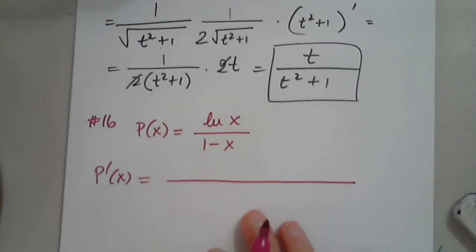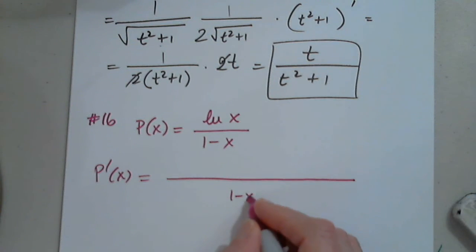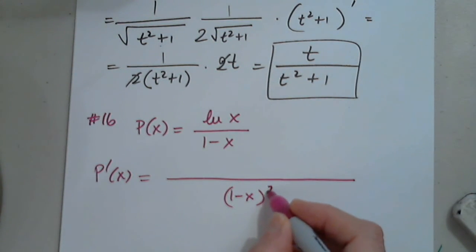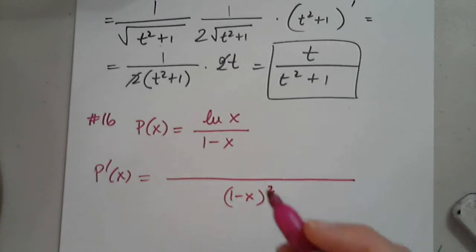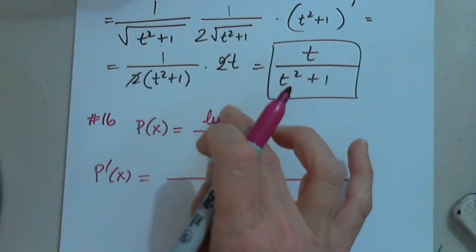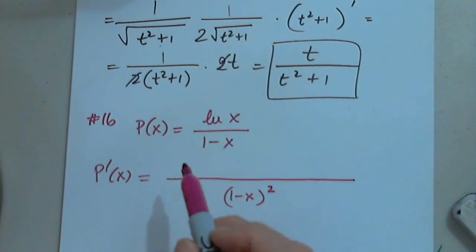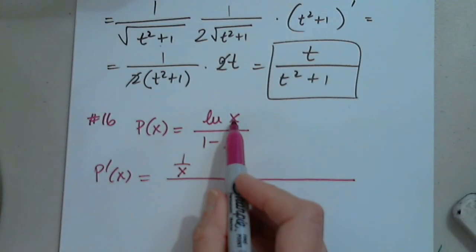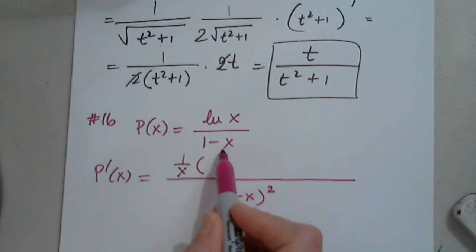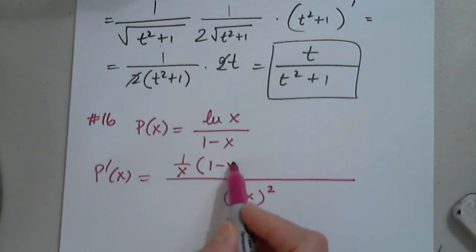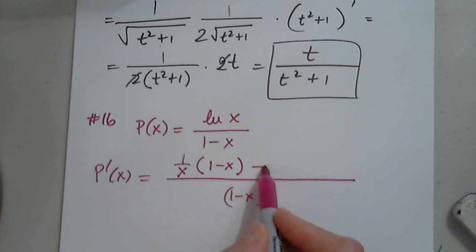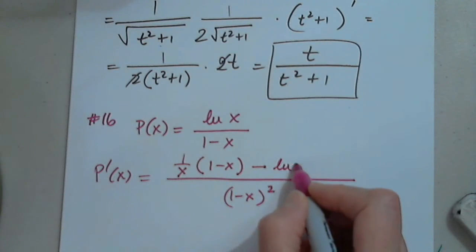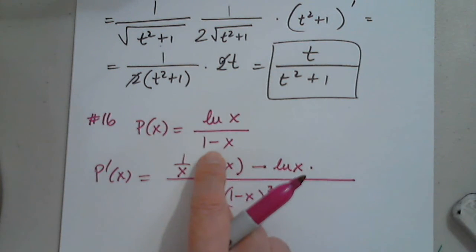Let's start with the denominator because that's the easiest — it's just squared, so 1 minus x squared in the denominator. Now I differentiate the top: 1 minus x times 1 over x, minus the numerator times the denominator prime.